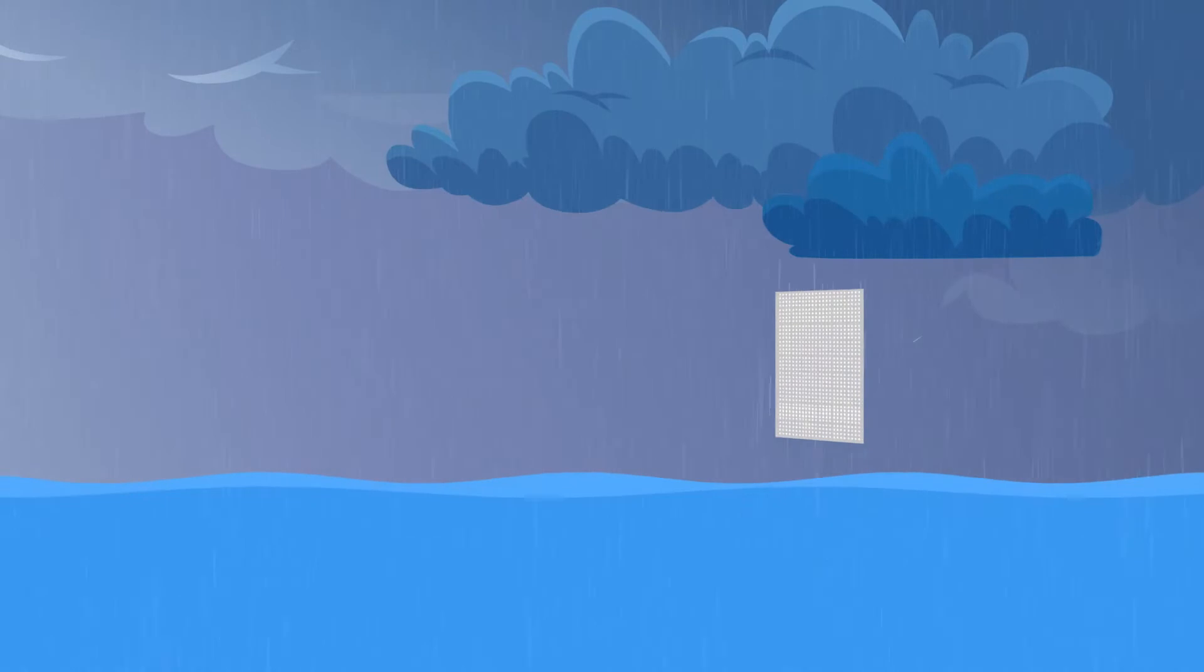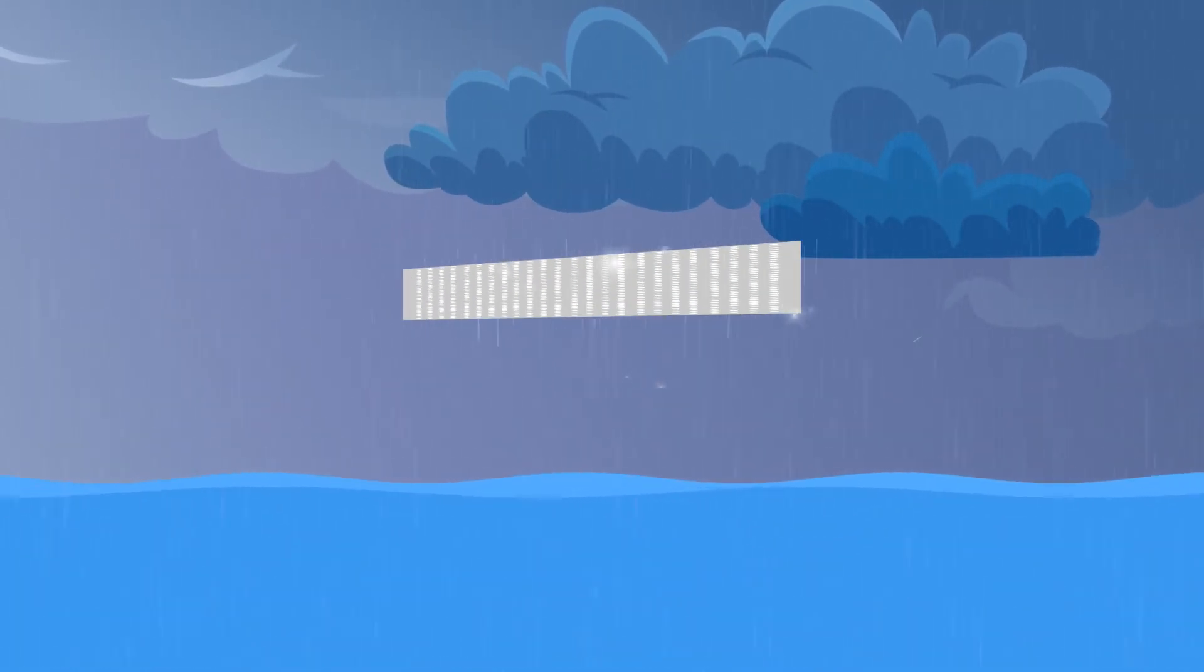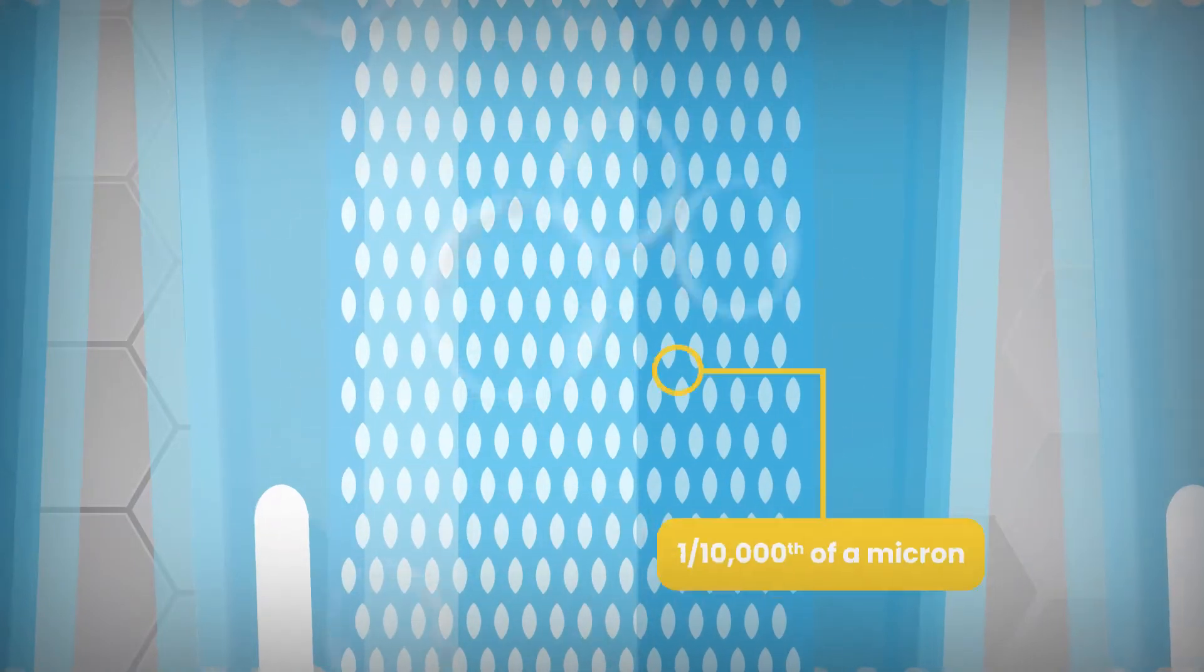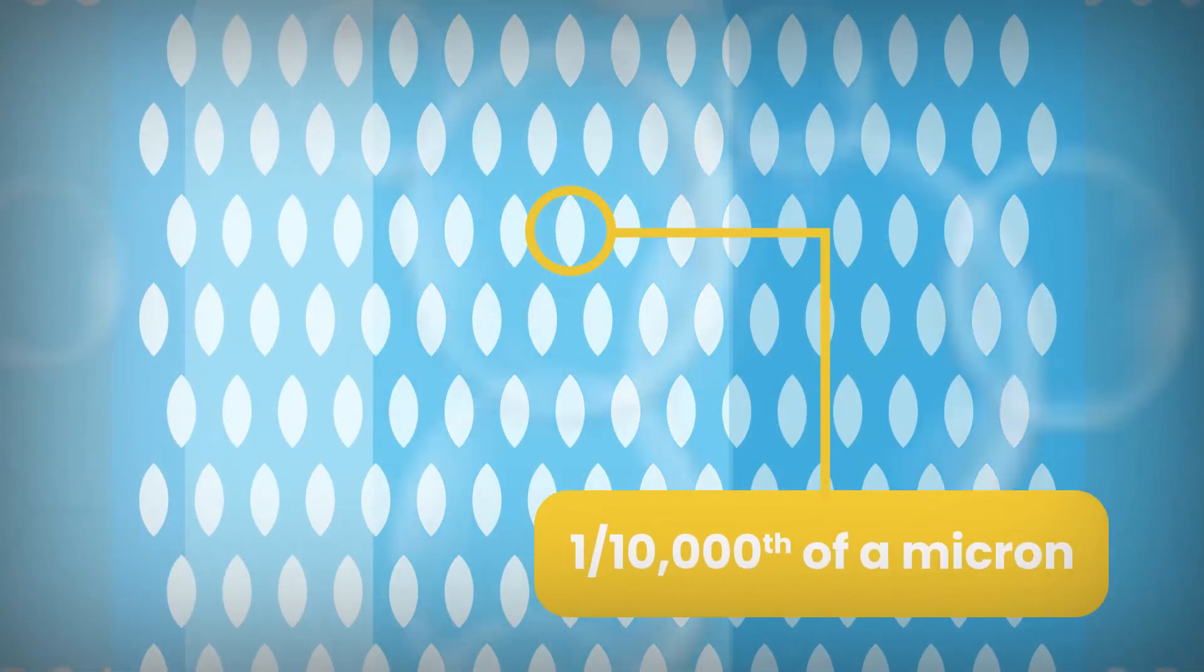Then, our water is forced at high pressure through an RO membrane. Its pores are so tiny that if you stretched a binder paper-sized sheet of our RO membrane across the Pacific Ocean, its pores would only be as wide as a dime. That's why it removes particles down to one ten-thousandth of a micron.